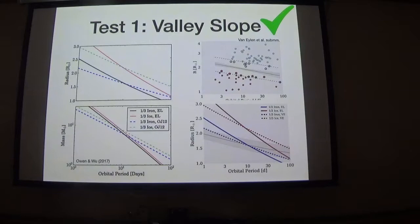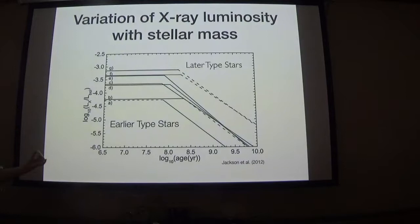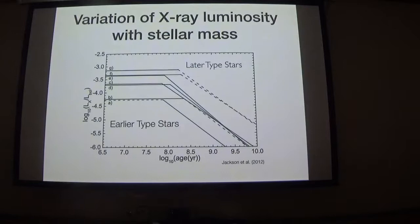The second test: this picture has spectral type dependence. Earlier-type stars have lower relative X-ray and UV luminosity lasting a shorter time, compared to later-type stars. So if you look at the planet population at fixed bolometric flux, this evaporation process should be far more important around later-type stars than earlier-type stars. We don't yet have the data — a CKS-Cool proposal is filling in this population — but the prediction is that as you go to lower stellar masses, everything should shift to where evaporation is more and more important.